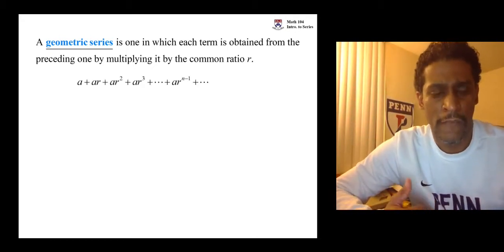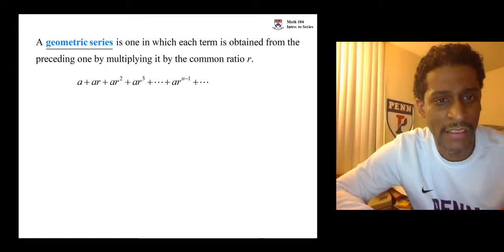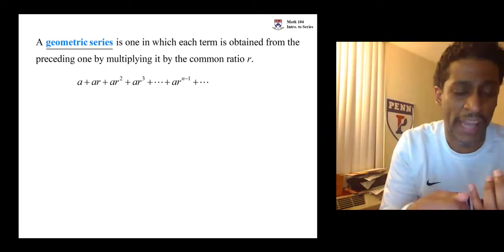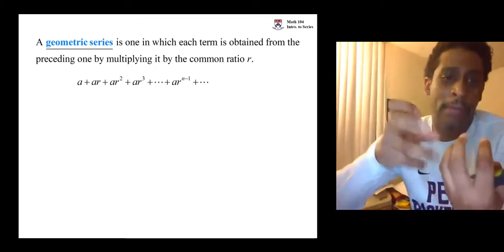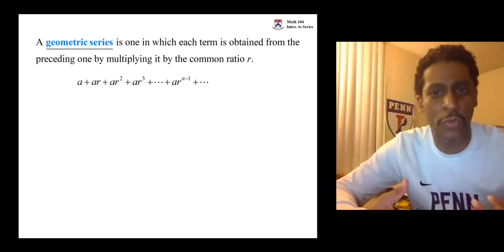Here's a generic geometric series. We call the first term A, and then the next term is obtained from that term by multiplying it by R, so we have AR. The next term is obtained from that term by multiplying it by R, so we have AR squared and AR cubed.